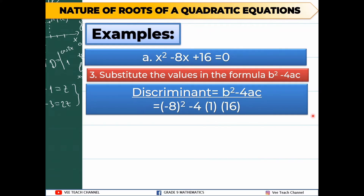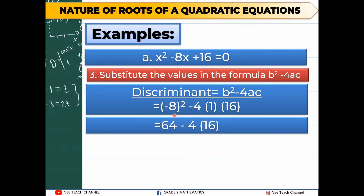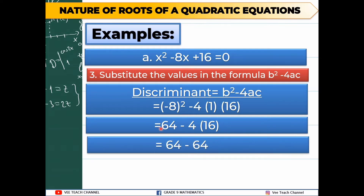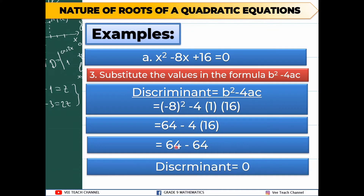Negative 8 squared: negative 8 times negative 8 is 64. Minus 4, then multiply the numbers in parentheses: 1 times 16 is 16. Then 4 times 16 is 64. So 64 minus 64 is equal to 0. We have now obtained our discriminant, and our discriminant is equal to 0.